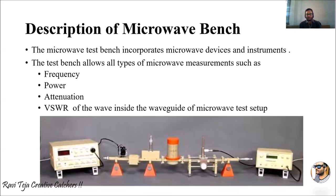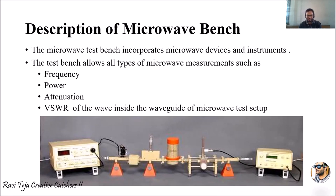This is how a microwave bench setup looks. Starting from the left side, we have a klystron power supply and klystron amplifier or oscillator, followed by an isolator, then a variable attenuator, then a frequency meter, then the slotted line, and then the matched termination. The slotted line has a probe through which we can take readings of the signal flowing in the waveguide.